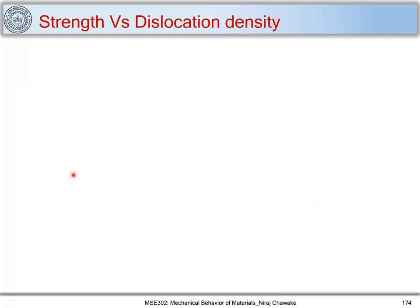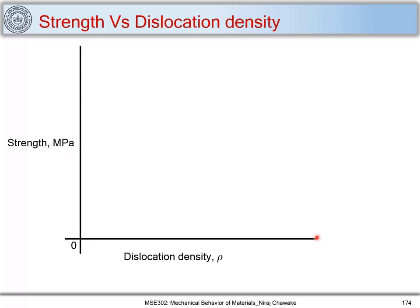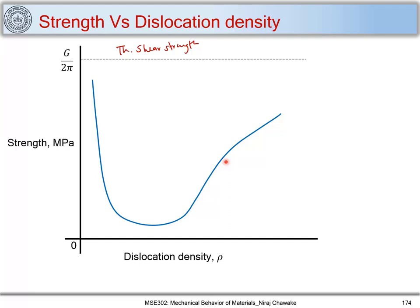Now let's plot strength versus dislocation density. At zero dislocation density we have the theoretical shear strength. As dislocation density increases from a low value, the strength drops from the theoretical shear strength to a minimum, then increases again. The strength appreciably increases at dislocation densities of around 10¹⁰ cm⁻², which is the range for most materials experiencing significant strengthening.